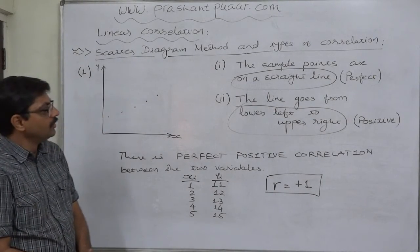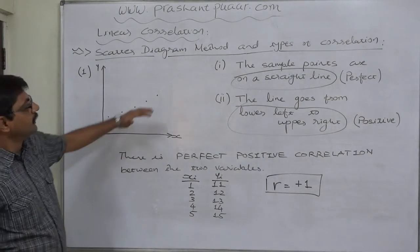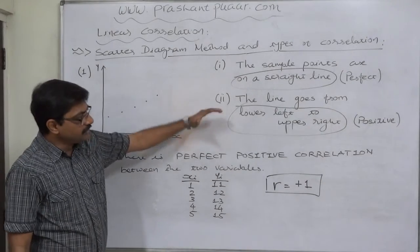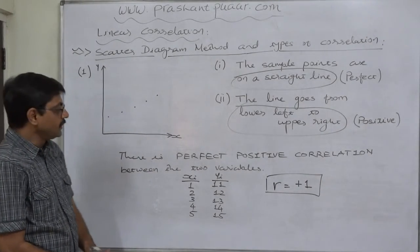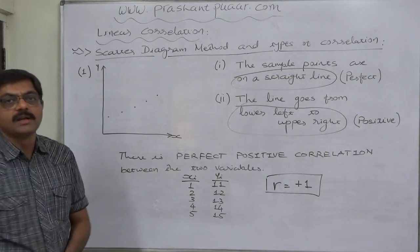So, the first probability or the first chance of getting perfect positive correlation between the two variables if we plot the sample points on a graph paper.